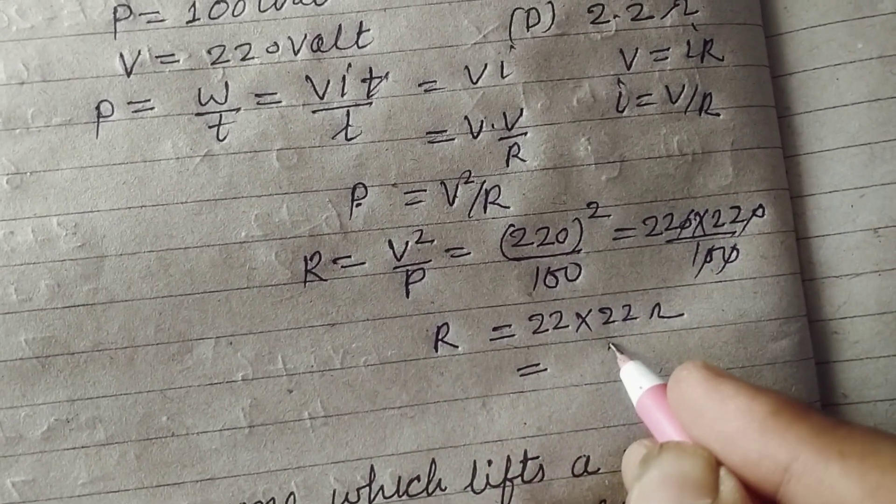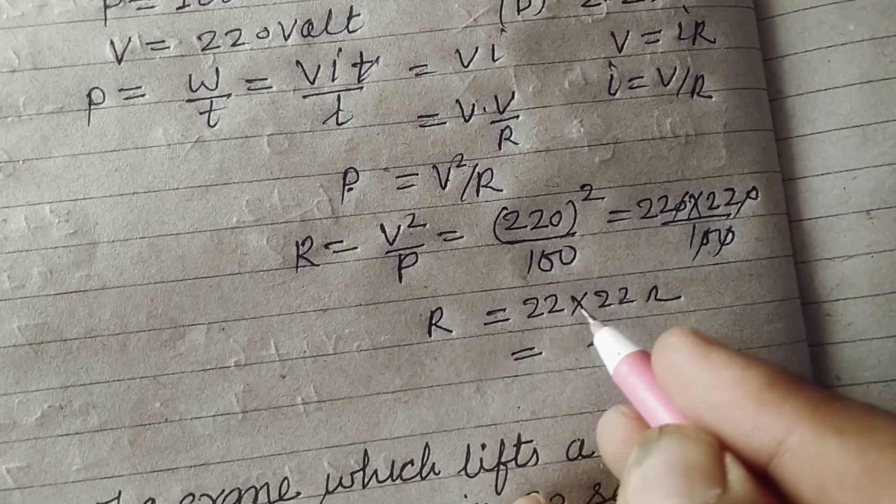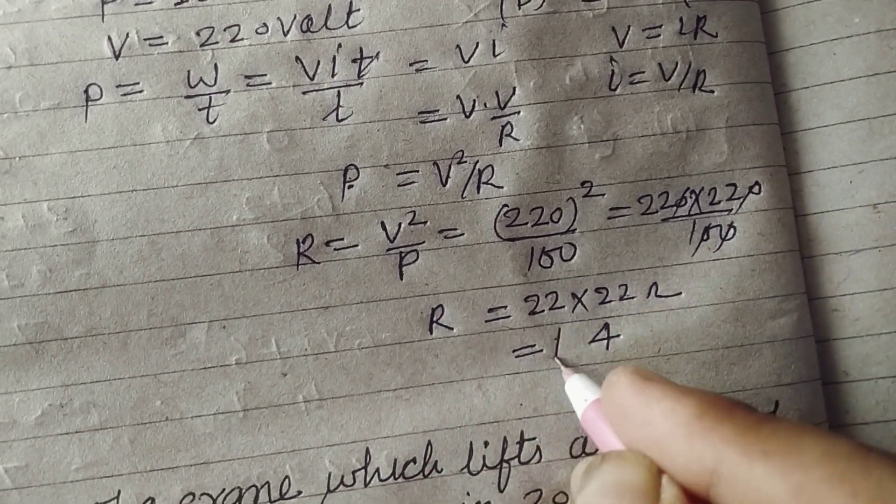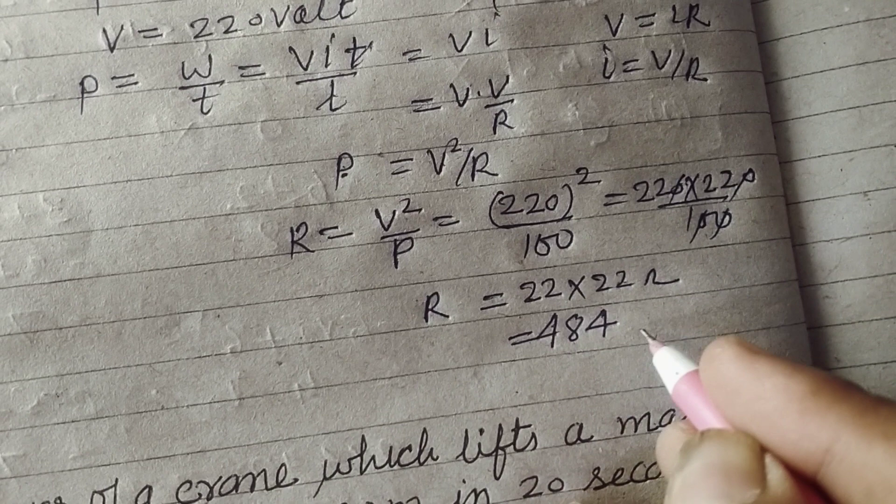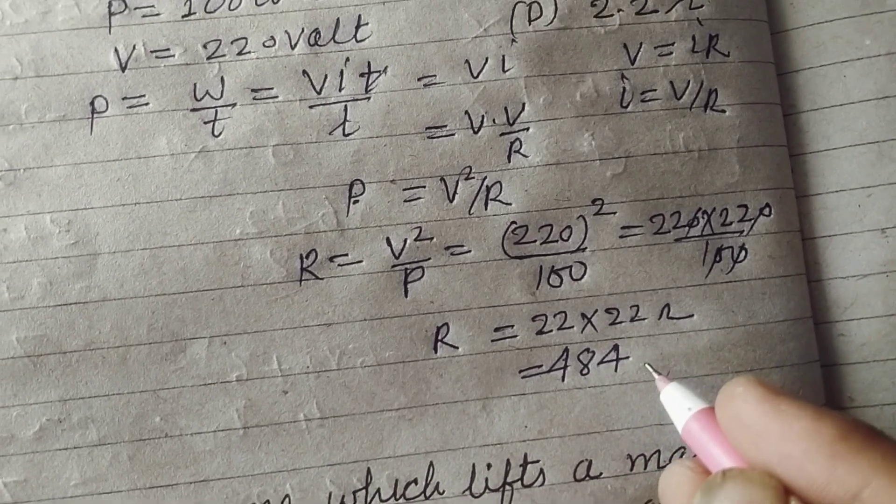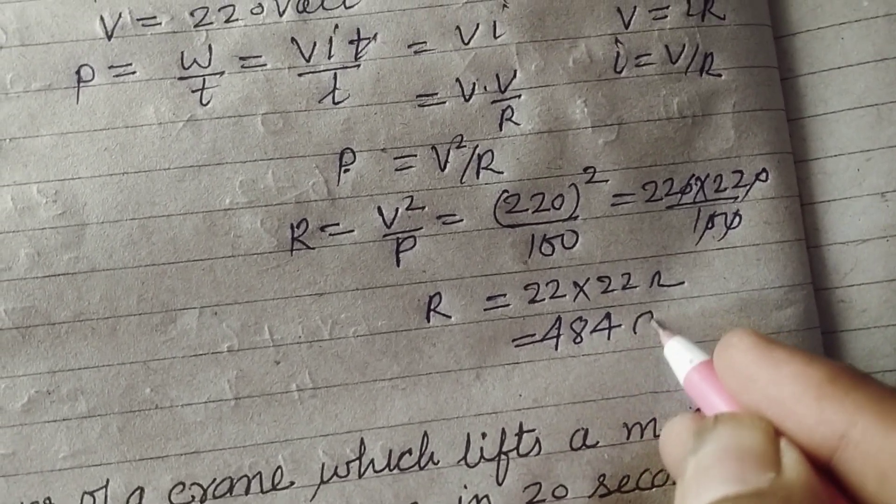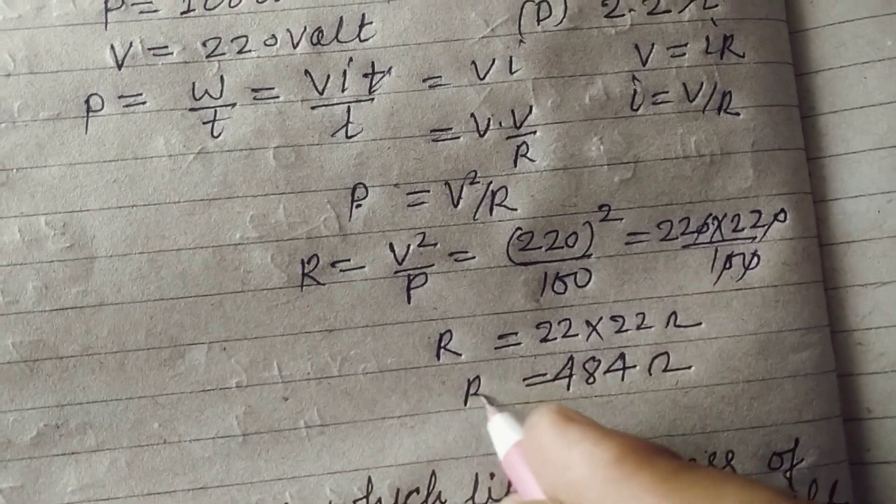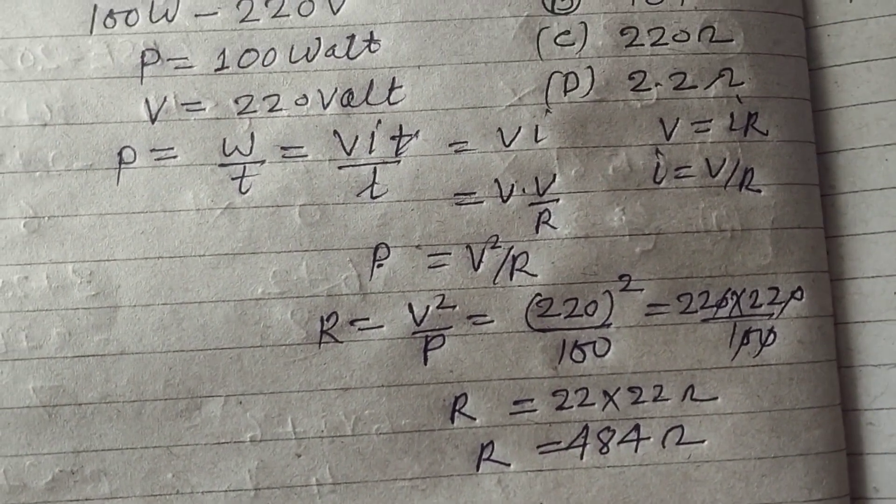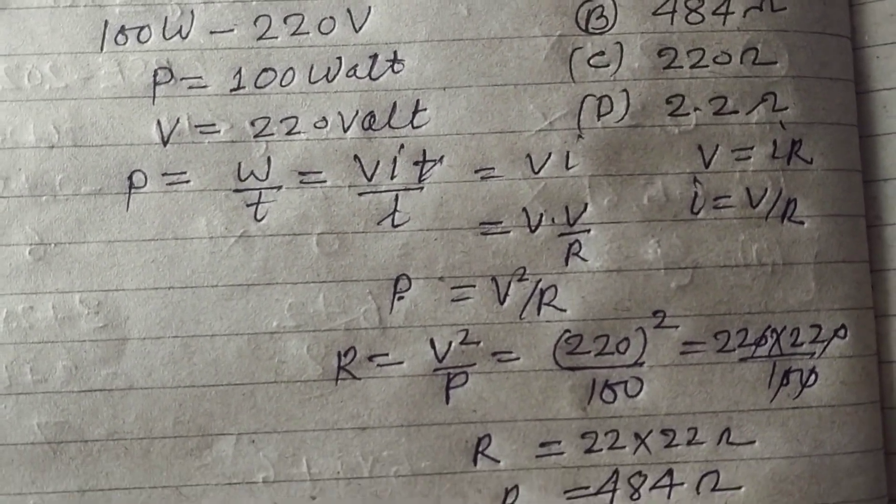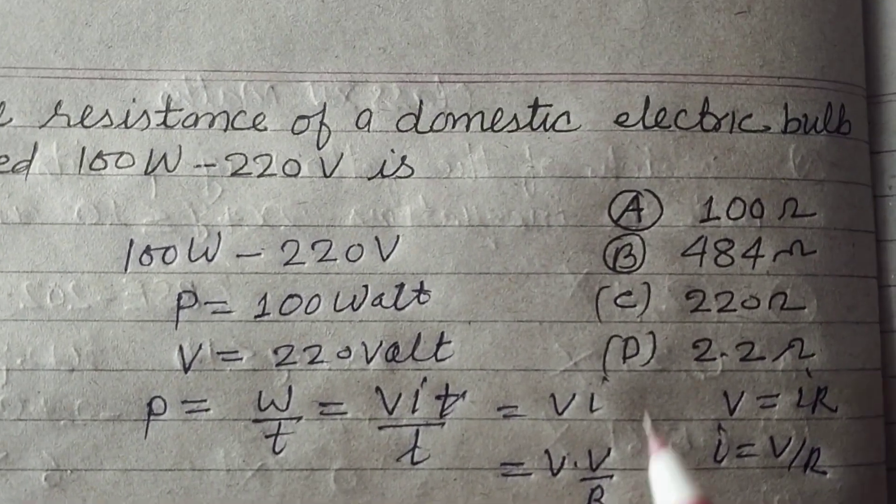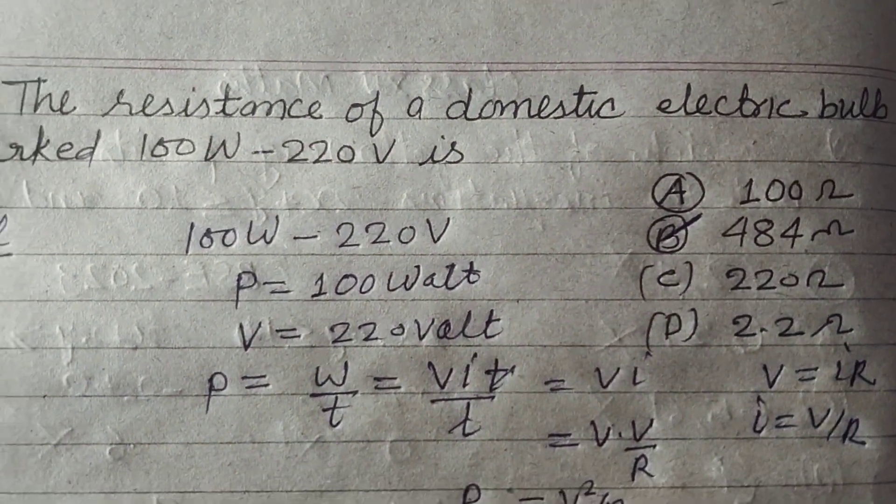Which is 22 plus 44. And 22 plus 44 plus 4 is 48. 484 Omega is the resistance of the bulb. So student answer of this question is V 484 Omega.